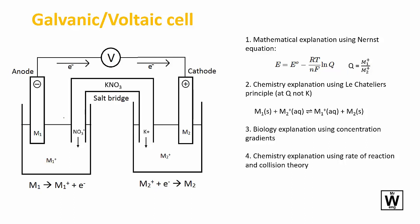So what you've got here is: if M1 decreases or increases, you'll get the same situation where Q will decrease. And if Q decreases, this will be a smaller number, so the amount of electricity going through will increase. Conversely, if you decrease M2 or increase M1 — making this much larger — then the voltage will decrease.